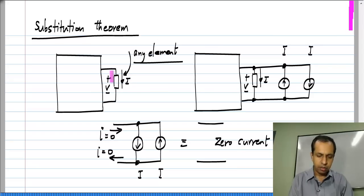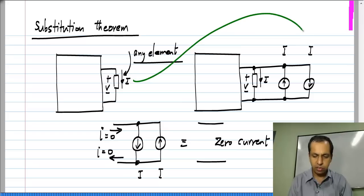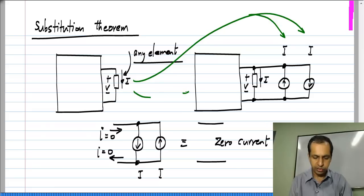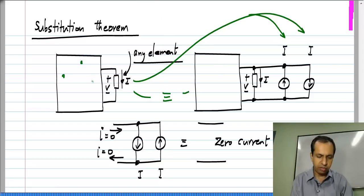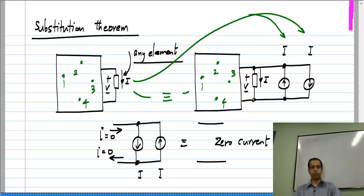Keep in mind that the circuit is operating in some condition. It has some values of independent sources and so on, and the voltage across this happens to be V and the current through that happens to be I. I choose the exact same current that is flowing through this, make two copies of it, and connect them in anti-parallel across the element. Clearly these two cases are identical — the voltage across this does not change, and all branch voltages and branch currents in the circuit remain unchanged, because I have really not made any changes. I have just connected a zero current source across the element.